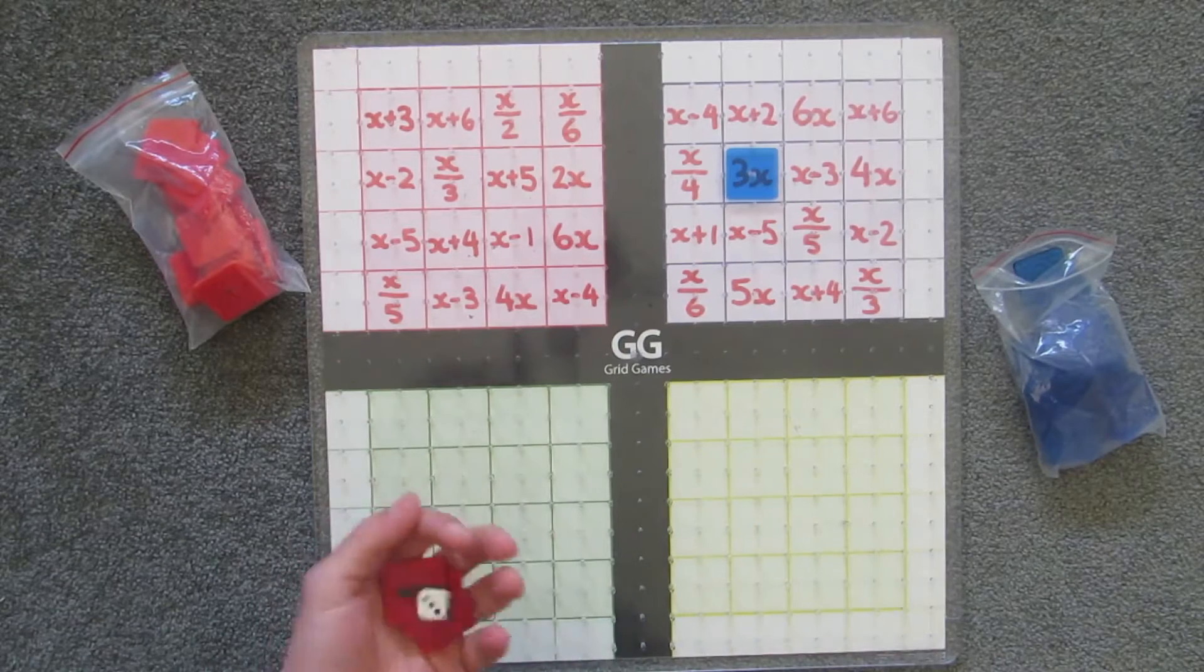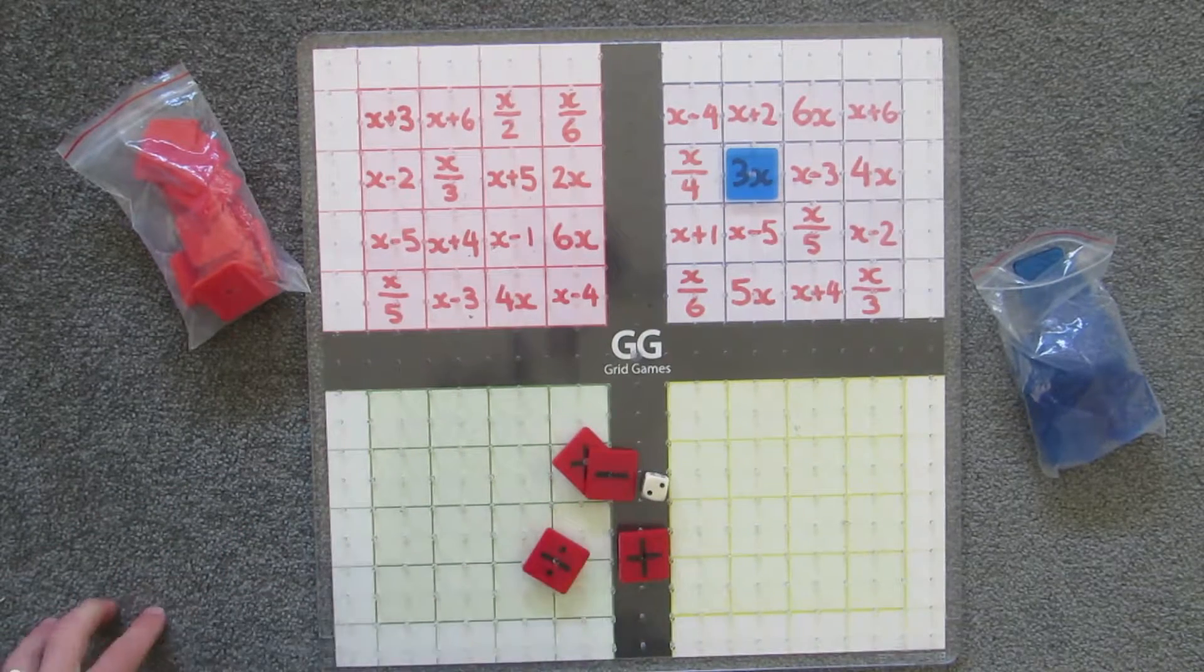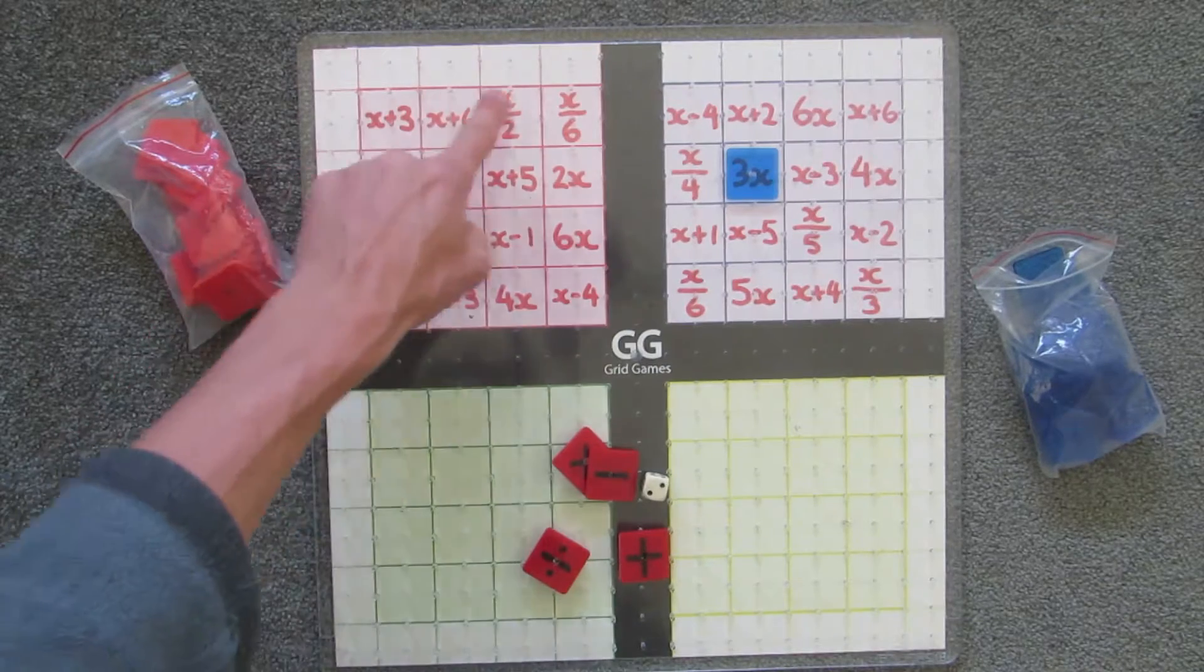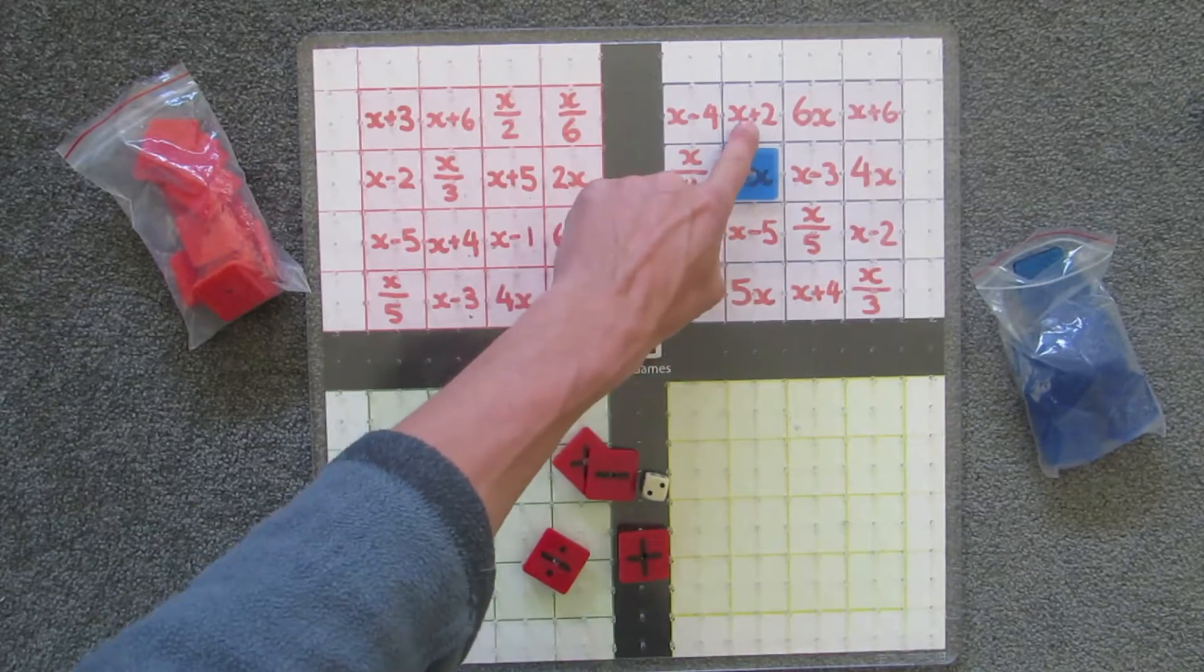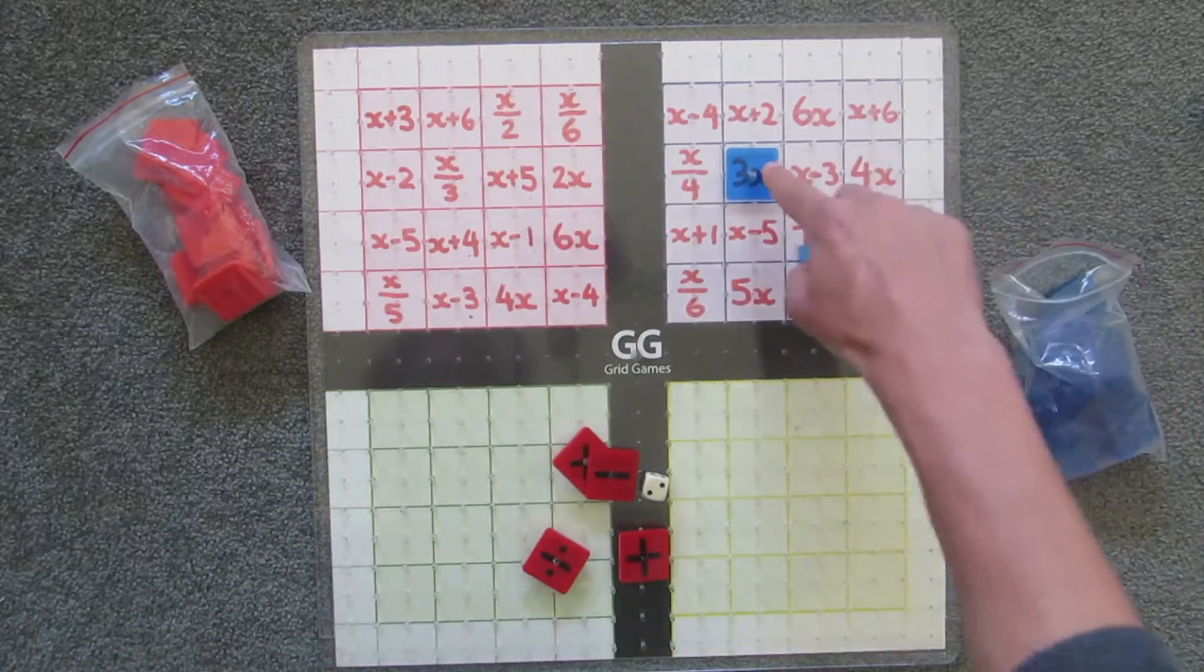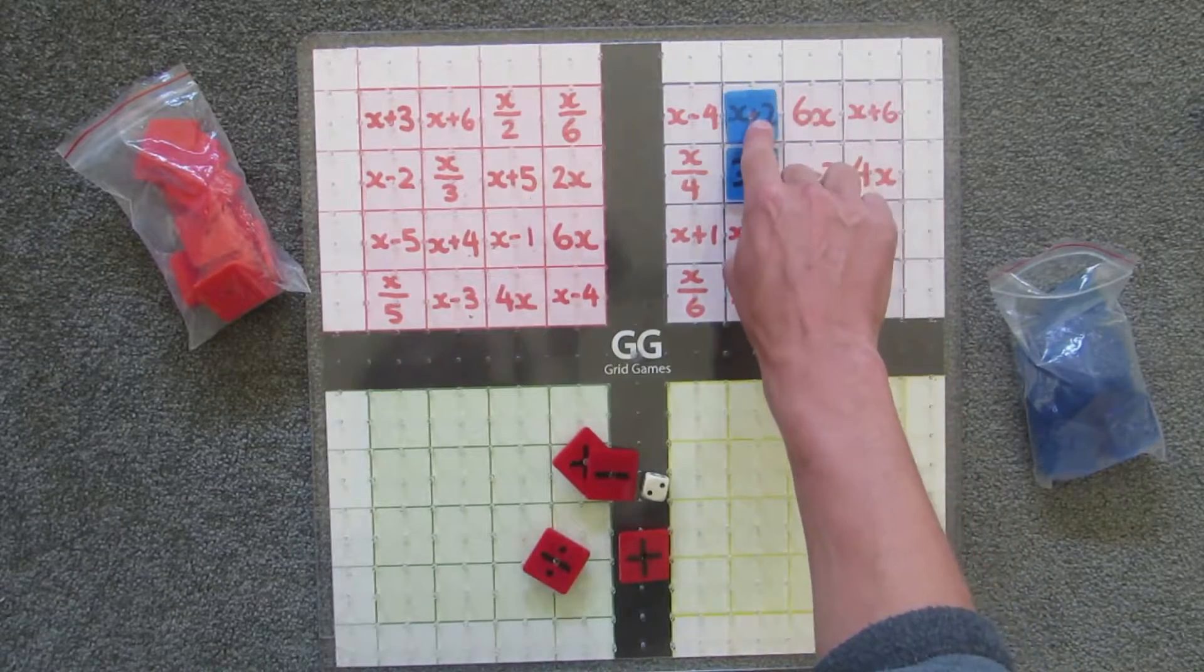So we'll go again. This time we're rolling. And so subtract 2. If anyone has an x plus 2, subtracting 2 will just leave you with x. So there it is. Blue's got another one. So subtract 2 gets rid of that plus 2 and leaves you with just x.